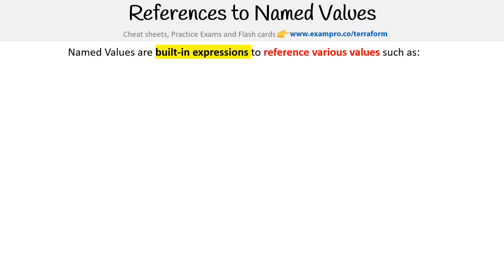We're taking a look here at named values. These are built-in expressions that reference various values you'll find in your configuration scripts. We do cover these in their respective sections, but I wanted to consolidate them here in one place, just so that you get a second chance to reinforce this information, because crux of questions on the exam could be based on knowing how the named values work. So let's go through them.